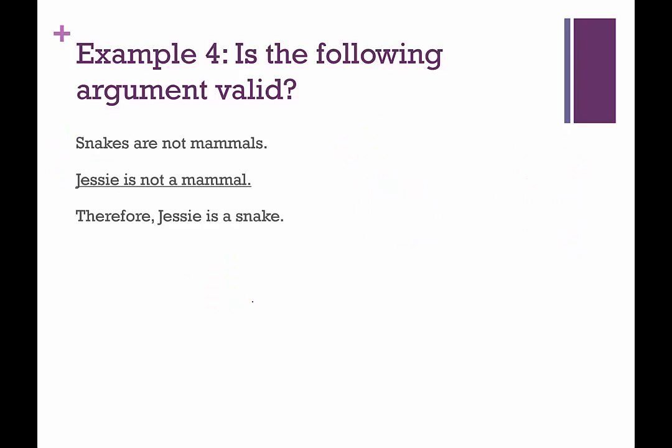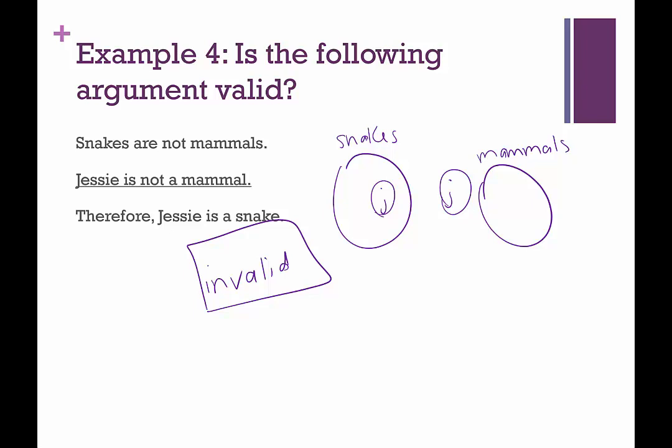One more example with our universal quantifiers. Okay, snakes are not mammals, okay, so we're going to put our snakes over here, and we're going to put our mammals over here. Jesse is not a mammal, okay, so Jesse does not go in the mammal category, but Jesse could be out here, or Jesse could be in here, right? Not a mammal, but Jesse could be a snake, or Jesse could be neither a mammal nor a snake, therefore Jesse is a snake. Can we for sure make that conclusion? Is that a valid conclusion to make? No, because, right, we could put maybe, because snakes aren't mammals either, but maybe Jesse is something else. So, because we have two potential places that Jesse could lie in our Euler diagram, this argument is invalid. Invalid argument. Okay, so those were the universal quantifiers.